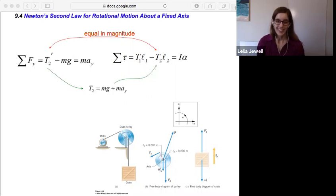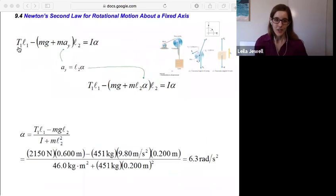So we have torque due to tension one minus the torque due to tension two, where we've plugged in for tension two is mg plus mAy, and that's equal to the rotational moment of inertia I times alpha.